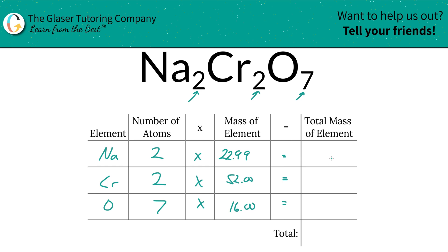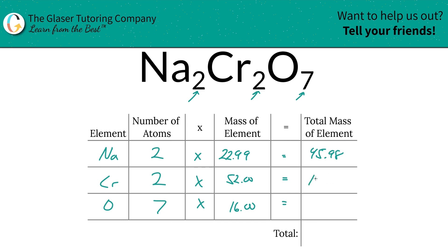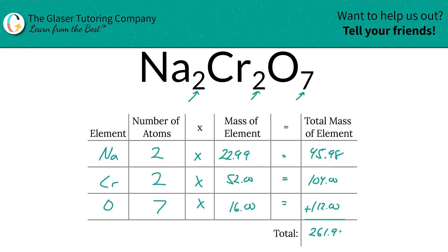Then we're going to find the total mass of each element by multiplying the number of atoms by the mass of the element. So the total mass of sodium will be 45.98 units of mass. Chromium is 104. And then oxygen is going to be 112. To find the total mass of the compound, we simply add up that column, giving us 261.98.